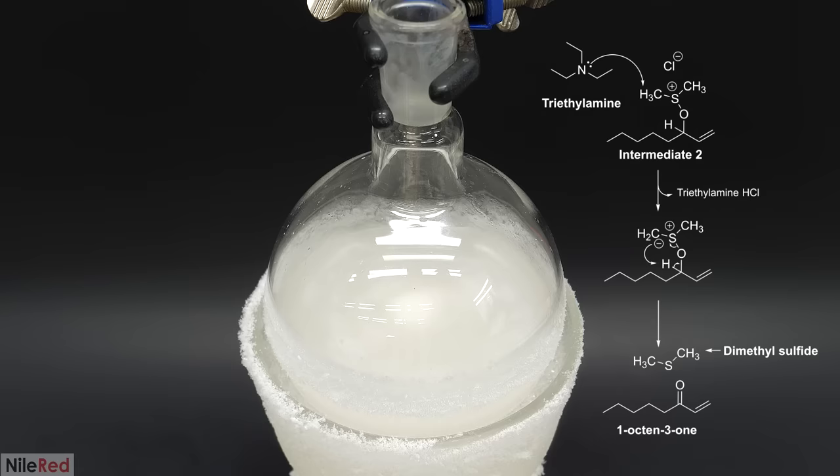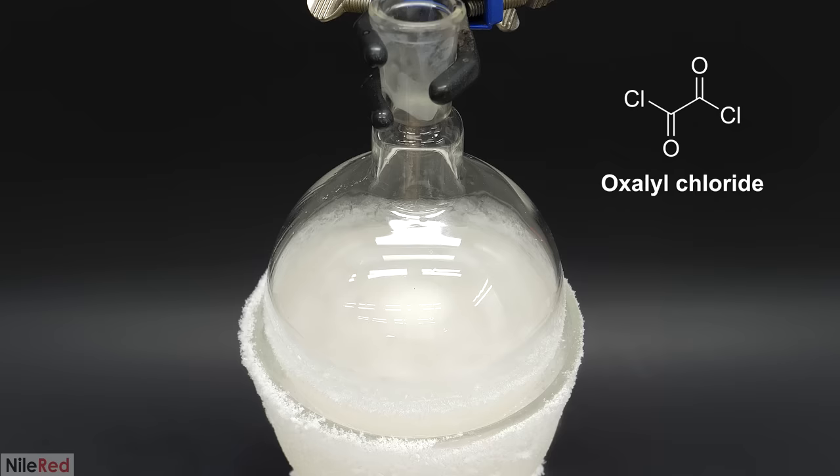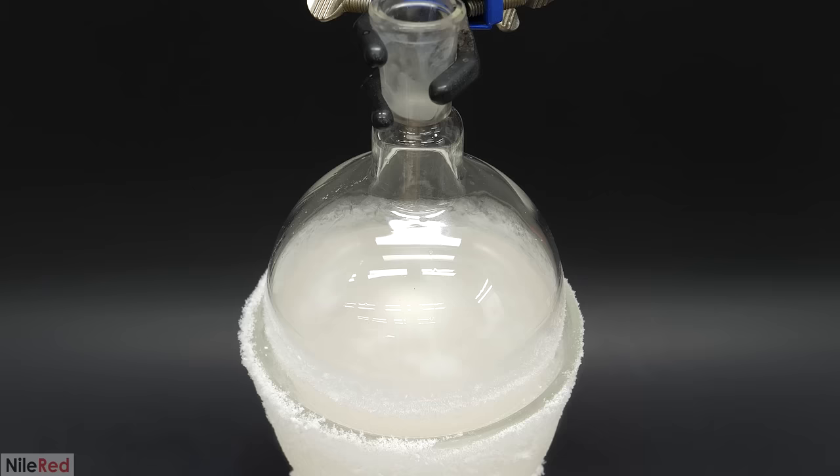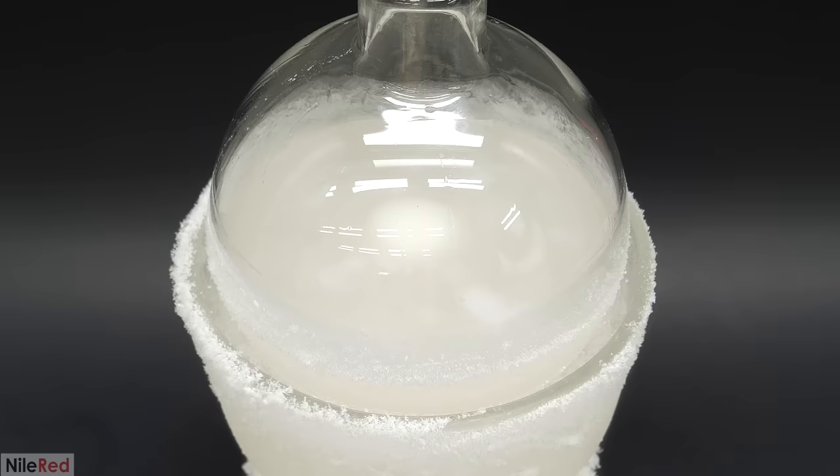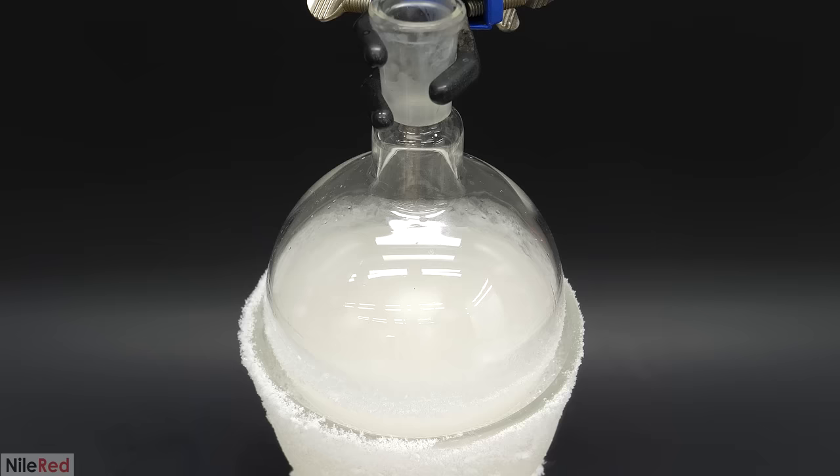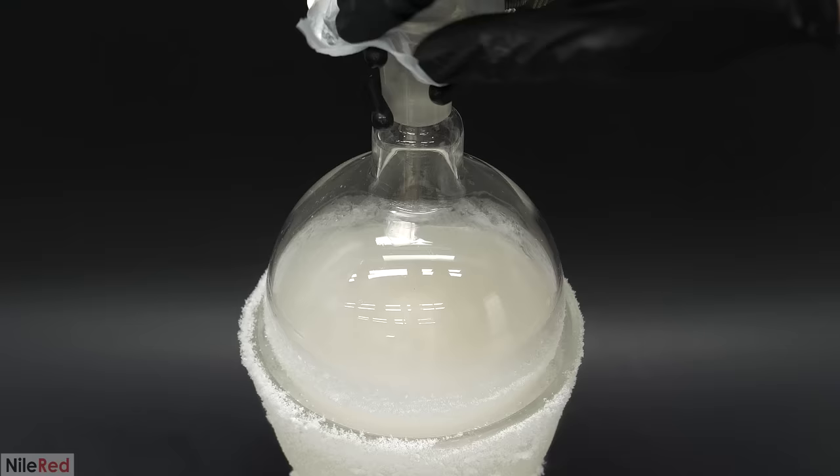This whole reaction mechanism is very similar to a popular one called the Swern oxidation. In that one though, instead of using the phosphorous compound, it uses something called oxalyl chloride. I almost definitely could have done the Swern here instead but I chose to do this one because I thought it might have been better. Oxalyl chloride is quite hard to get and make and it's also a lot more dangerous. I figured that if this did end up working, it could be a safer and more accessible alternative. But anyway, assuming that it did work, the final result of this reaction was supposed to be a new carbon-oxygen double bond and my beautiful 1-octen-3-one.